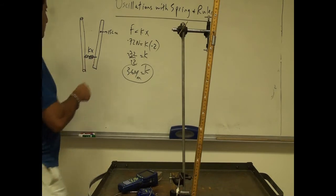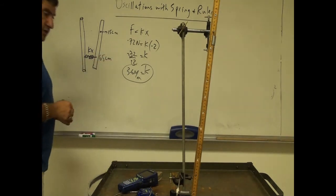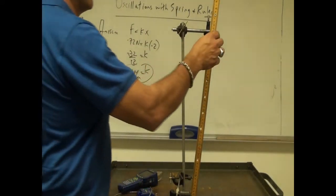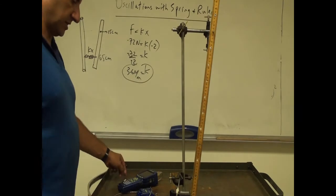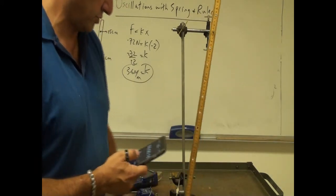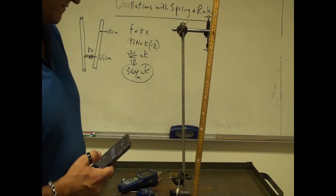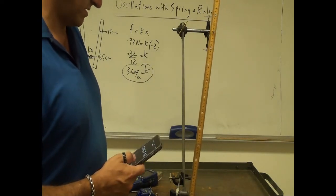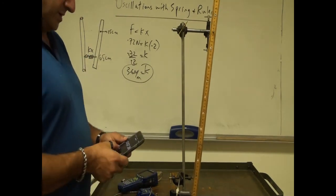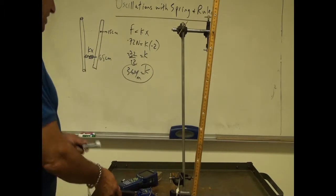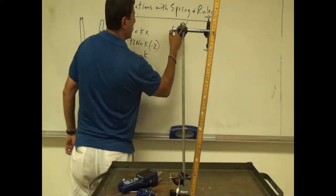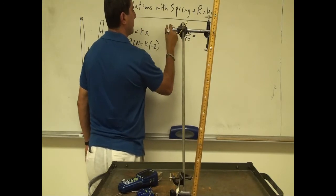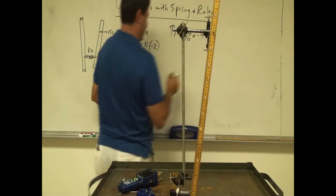The spring is connected at the 65 centimeter mark. Now I'm ready to perform my experiment. I count 10 oscillations and get 7.38 seconds. So I'll do it a couple of times. 7.38 seconds divided by 10 gives the period for one oscillation: 0.738 seconds.